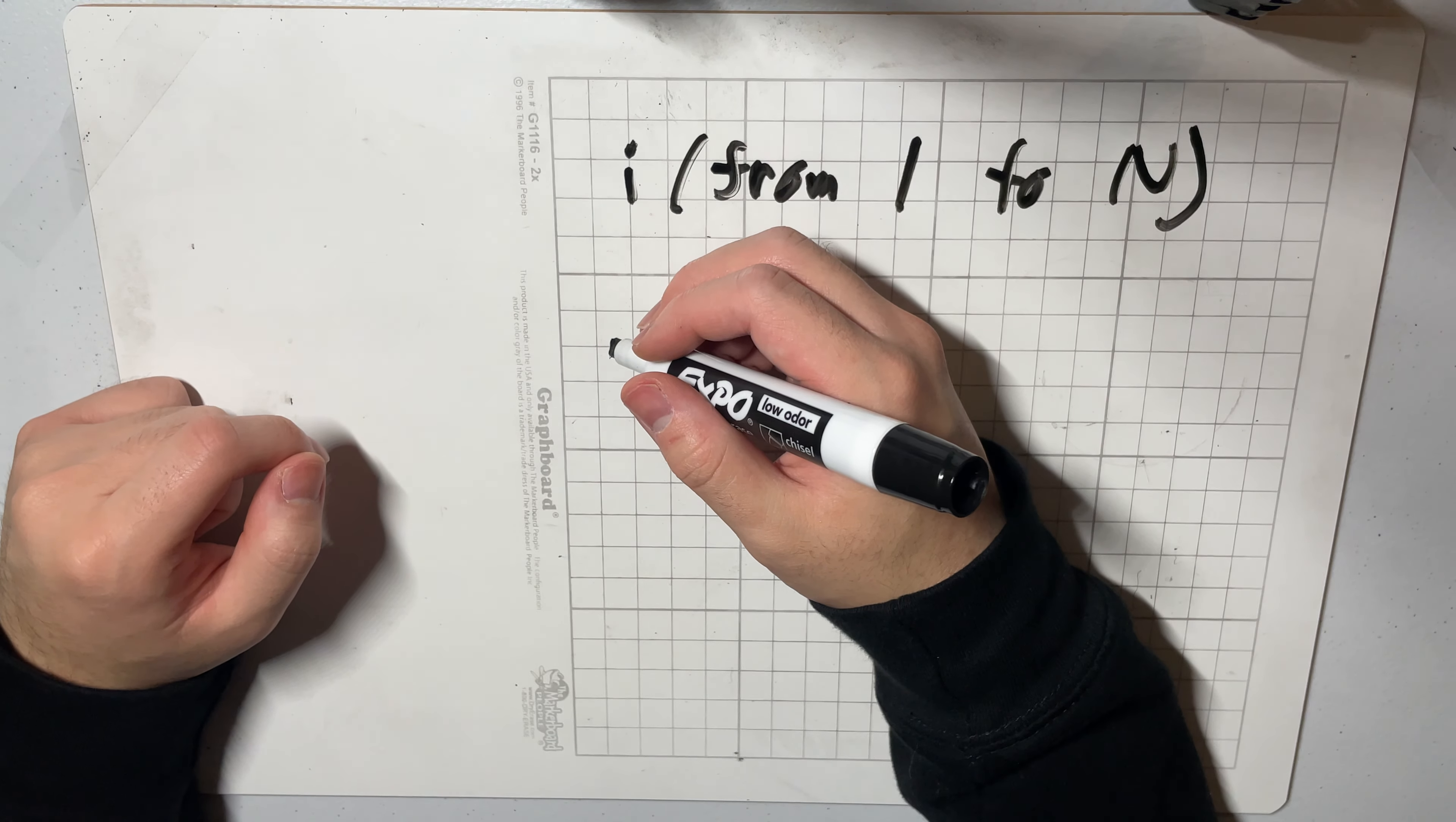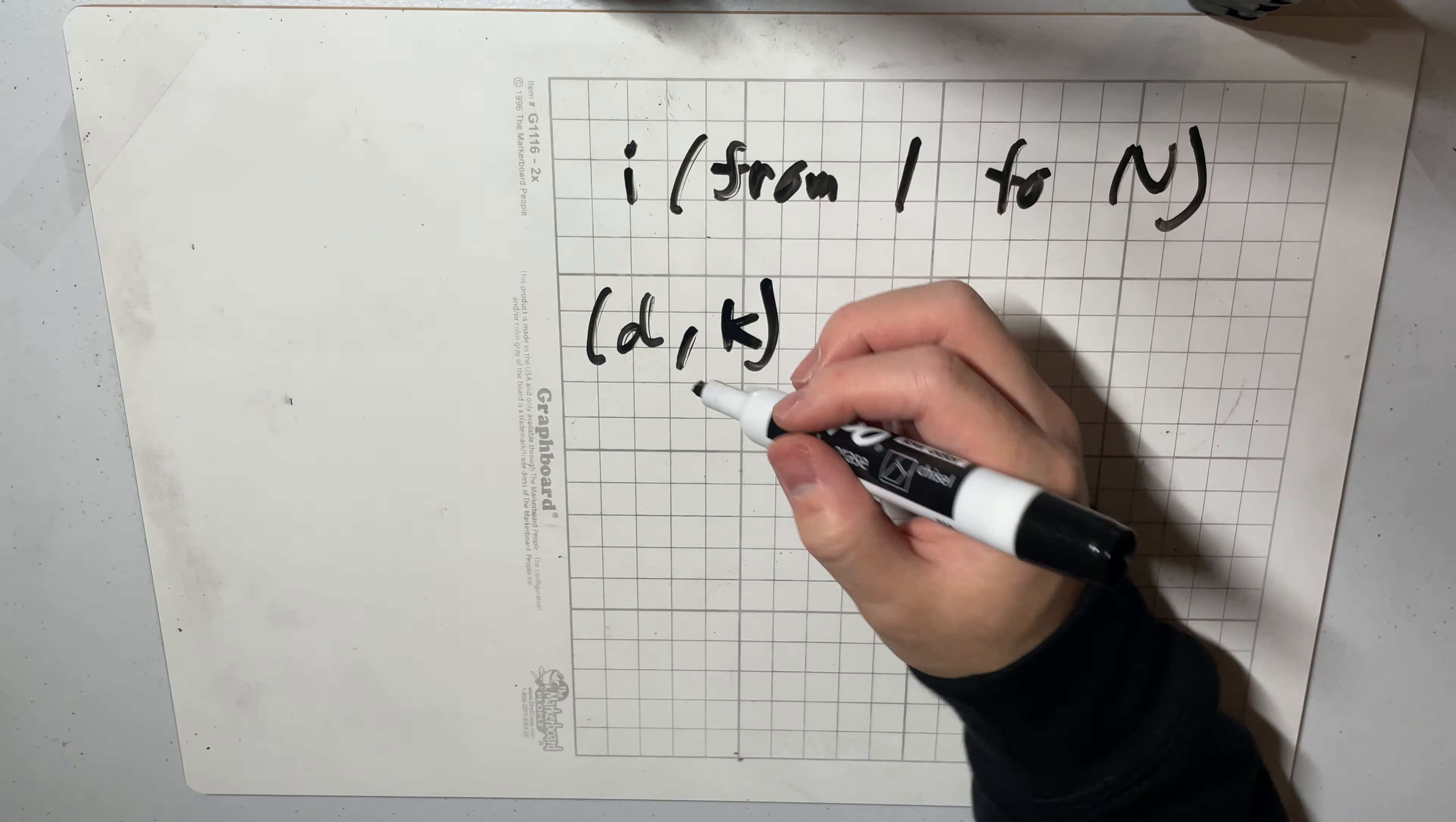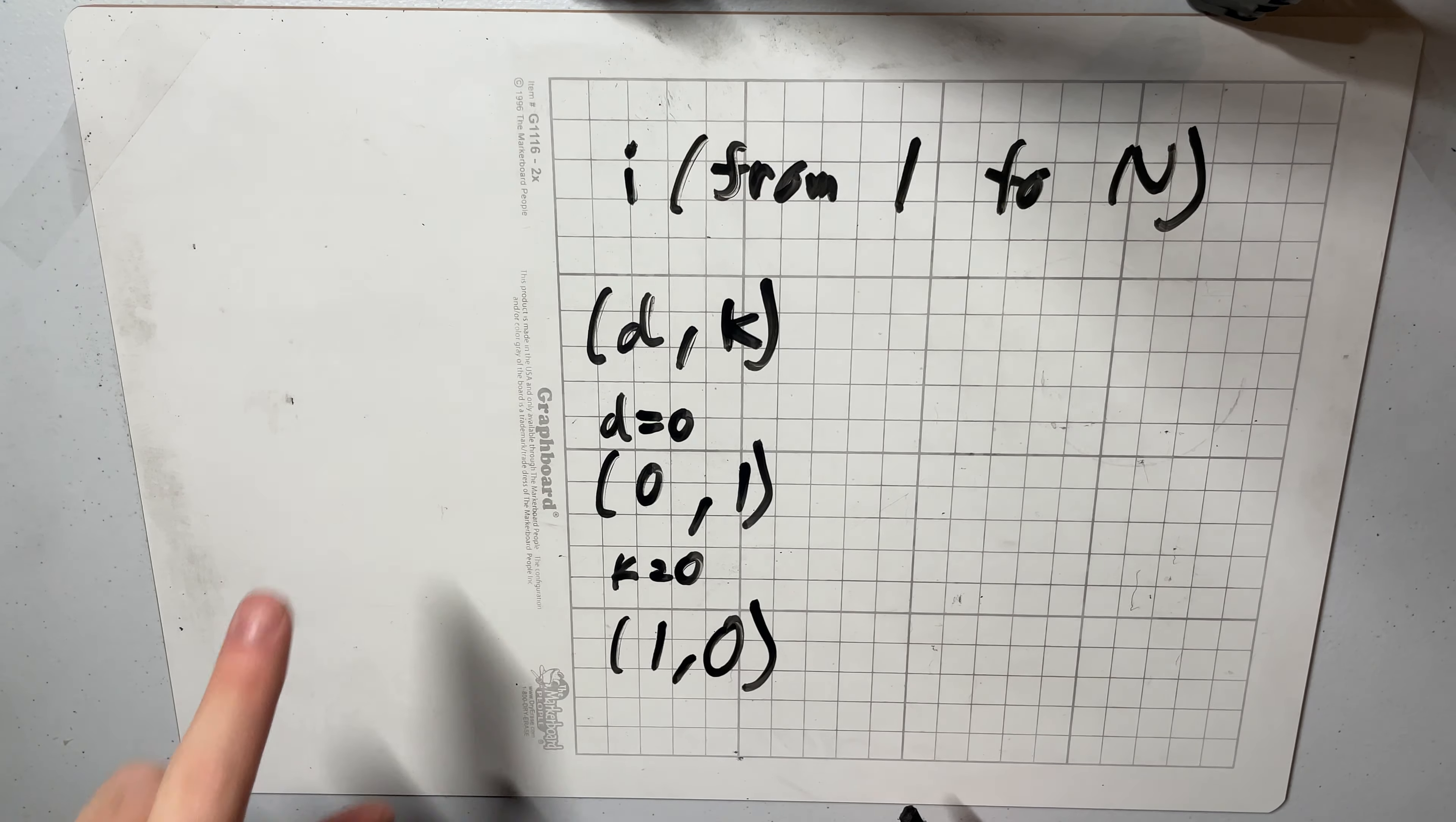So the way that we define this reduced ratio is that if we have the number of d characters in this prefix as d and number of k characters as k, then we want to ask ourselves is d or k equal to zero. If d is equal to zero then our reduced pair is 0,1 and if k is equal to zero then our reduced pair is 1,0. And so those are two special cases that we care about.